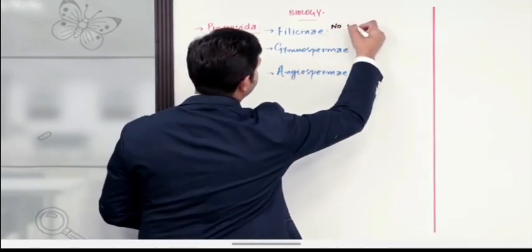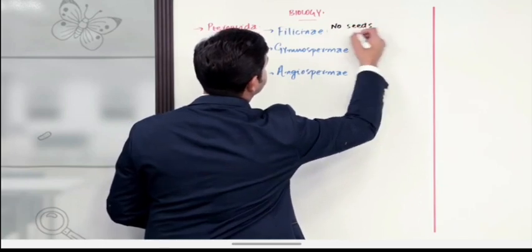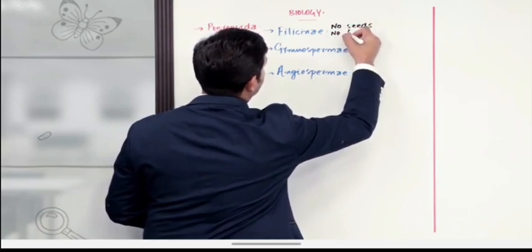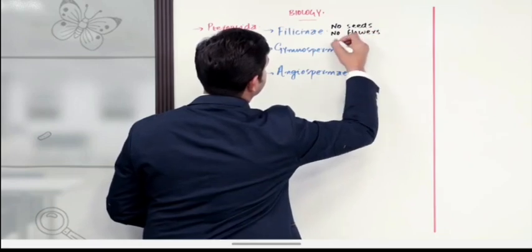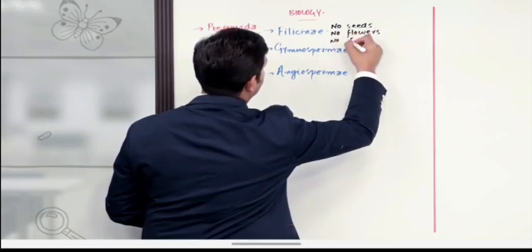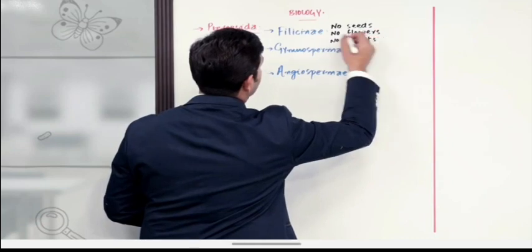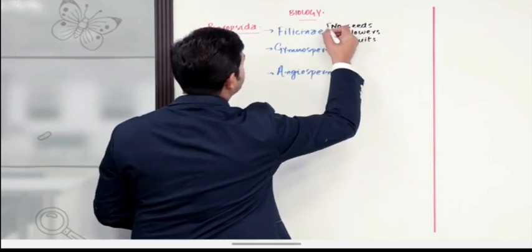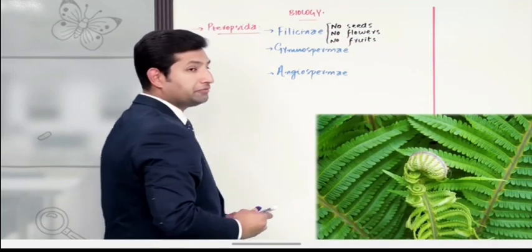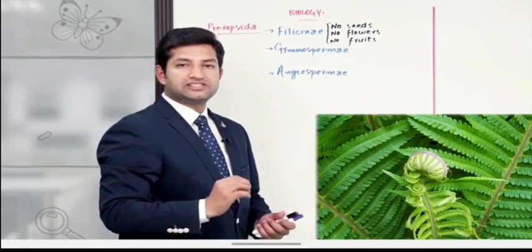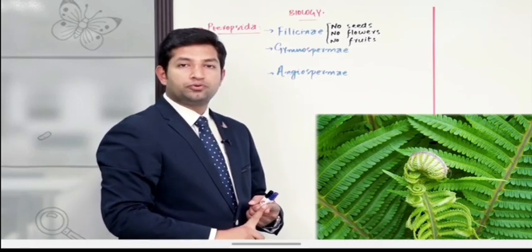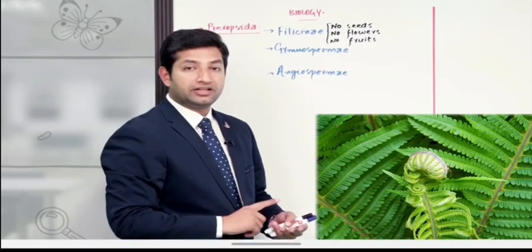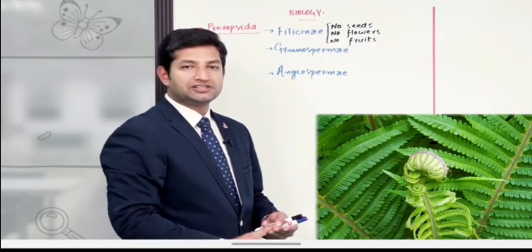Filicinae has no seeds, no flowers, and no fruits. यह तीनों features Filicinae के लिए हम mention करेंगे। तो इसका मतलब यह simple vascular plants हैं, जिनके अंदर हमें ना तो फूल नज़र आ रहे हैं, ना फल नज़र आ रहे हैं, और ना ही seeds नज़र आ रहे हैं, ना कोई बीज बन रहे हैं।